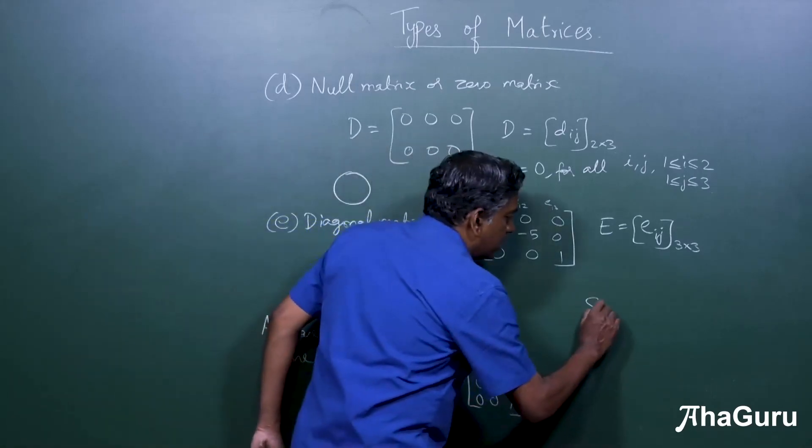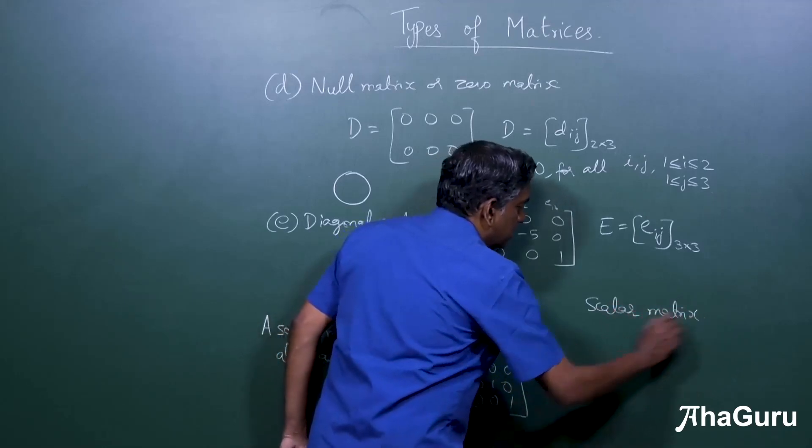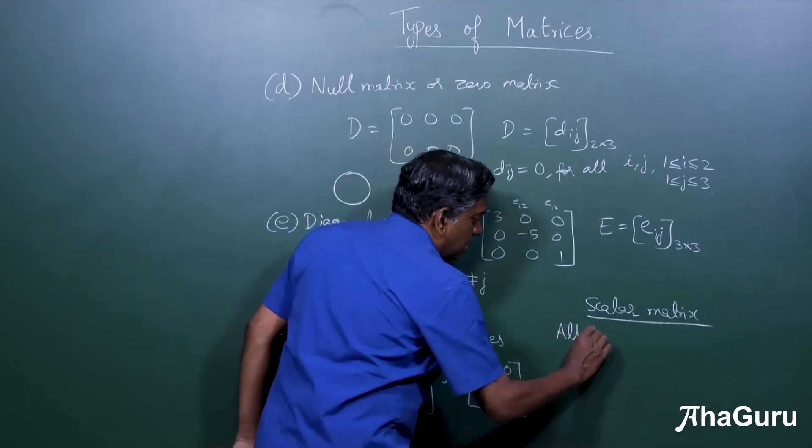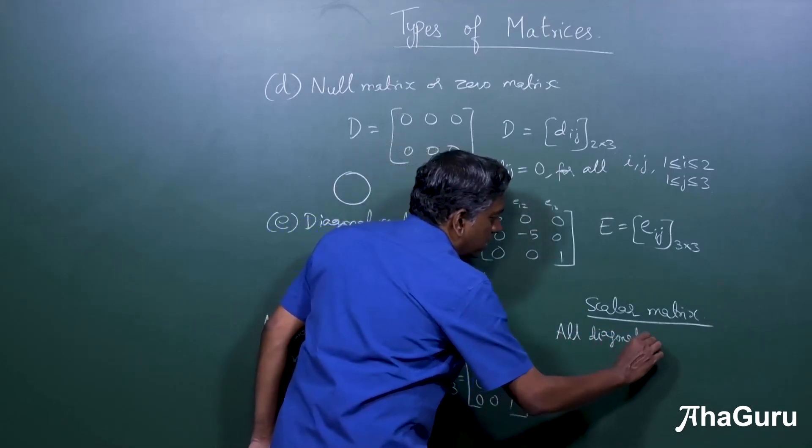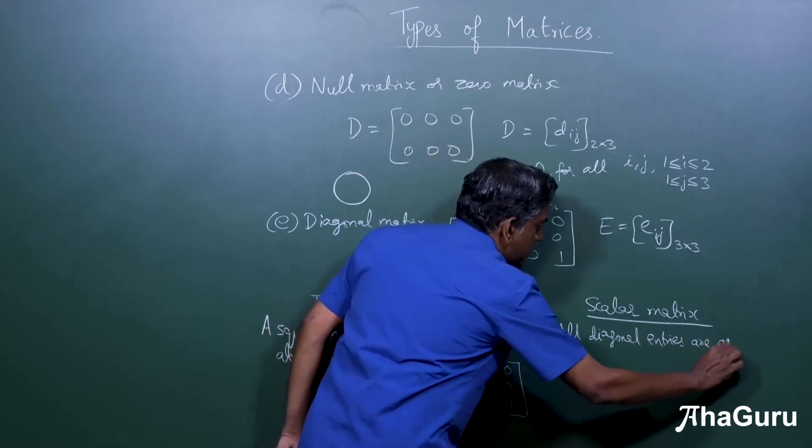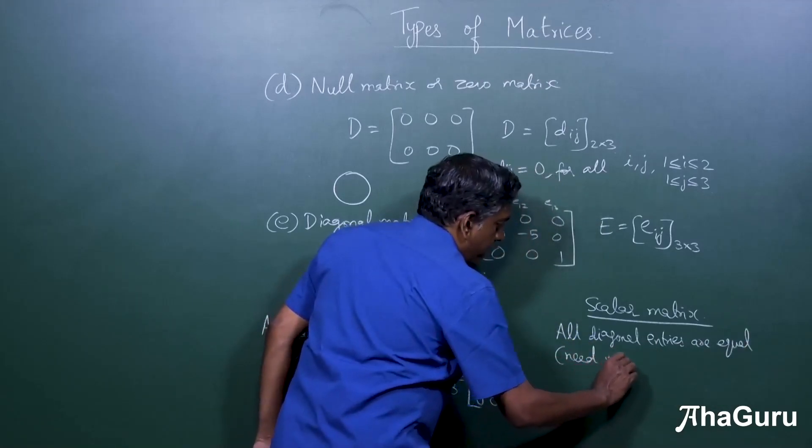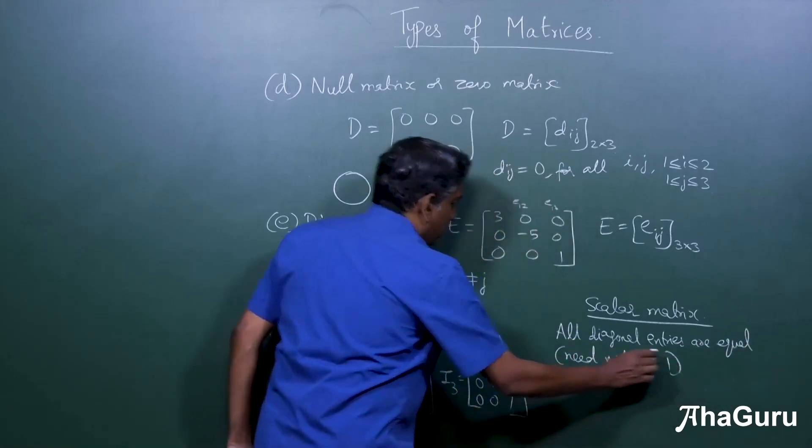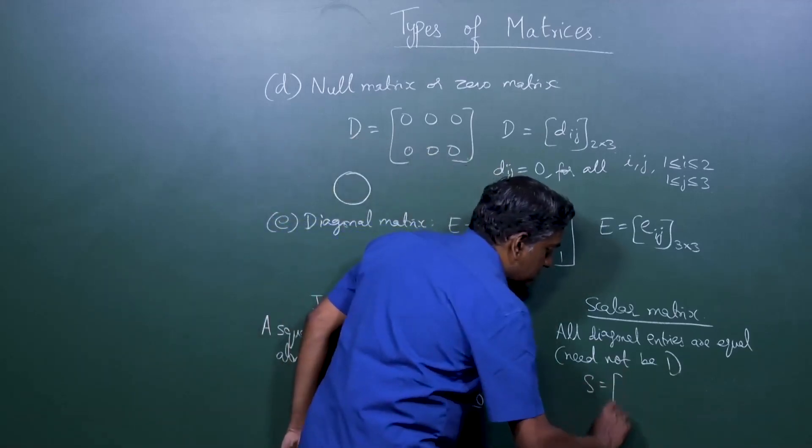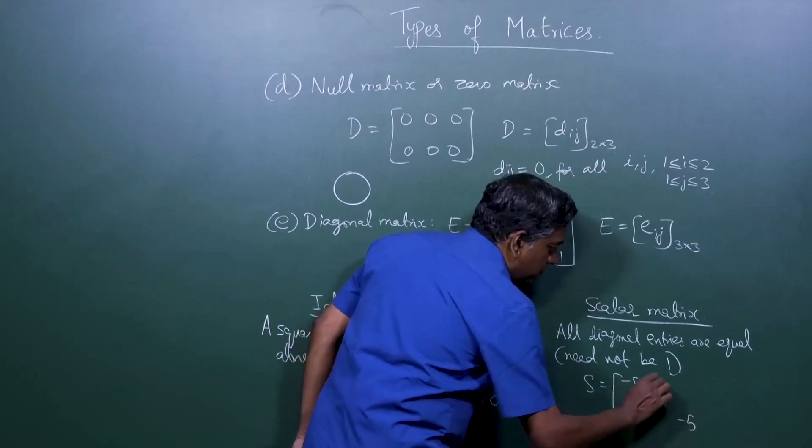And another category is what is known as the scalar matrix, where all diagonal entries are equal, need not be one.